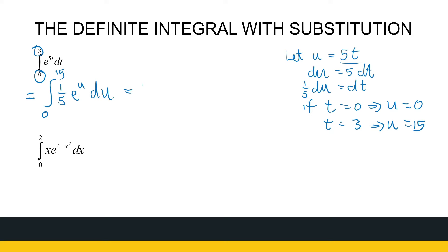Now I can calculate my antiderivative. It's 1 over 5 e to the power u between 15 and 0. So that's 1 over 5 e to the power of 15 minus e to the power 0. And we know e to the power 0 is just 1, so 1 over 5 times e to the power 15 minus 1.